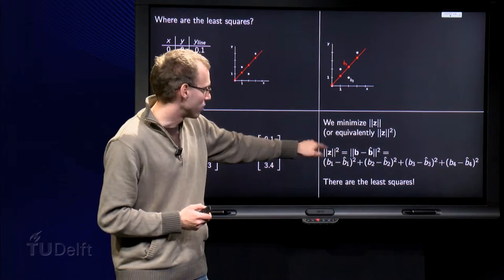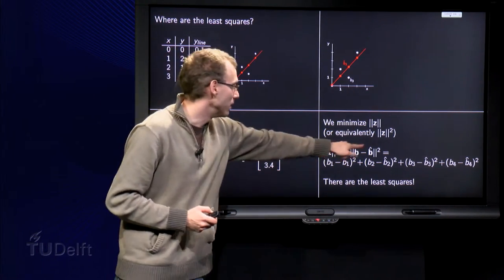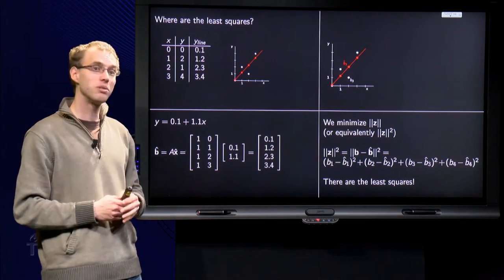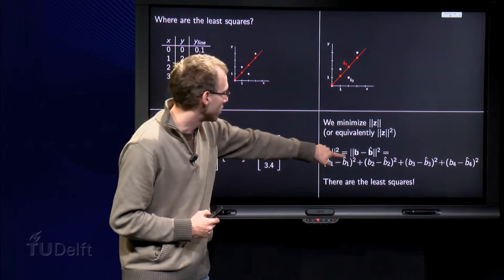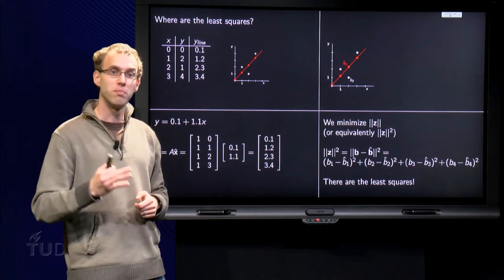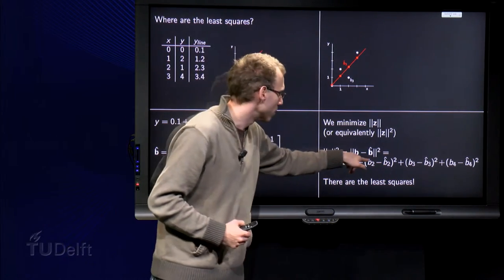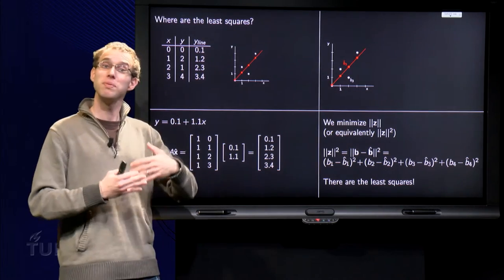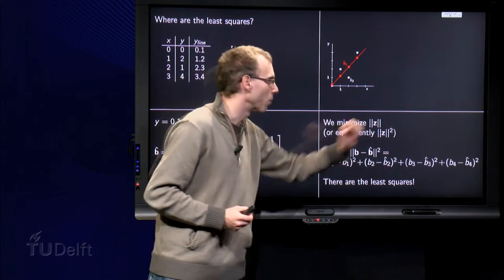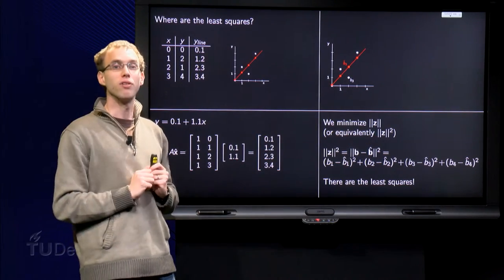Well, length of z squared equals the length of b minus b hat squared, and writing it out in components, we find b first component minus b hat first component squared plus b second component minus b hat second component squared and so on until the fourth component.